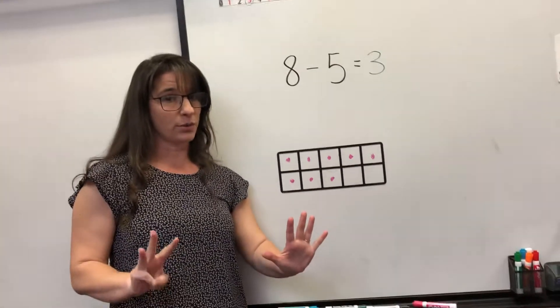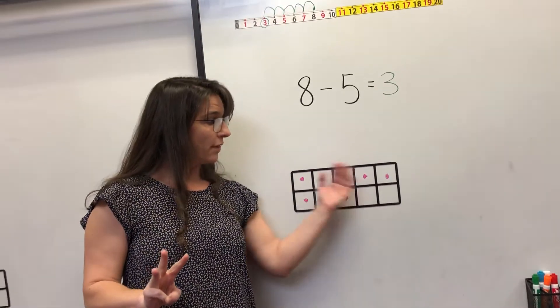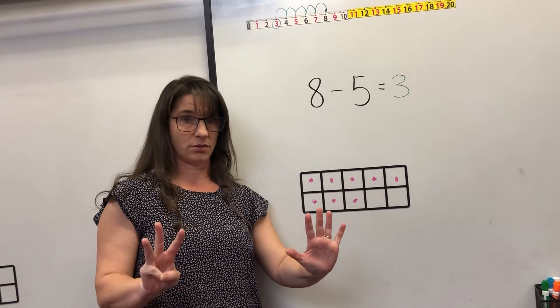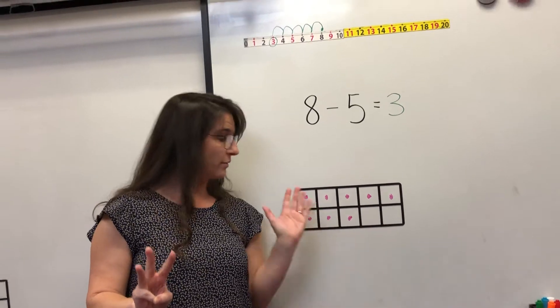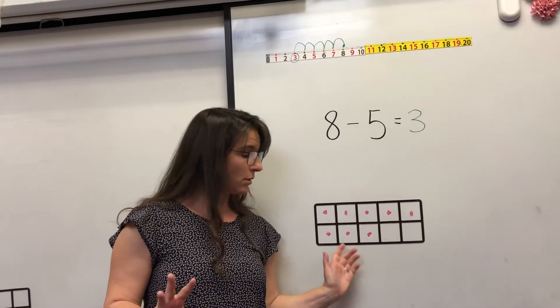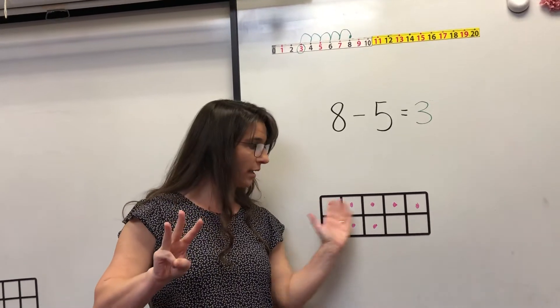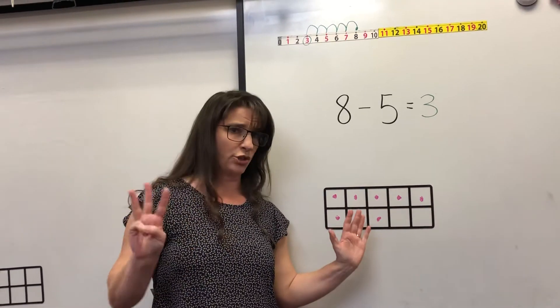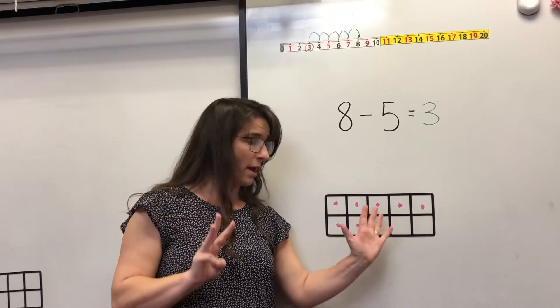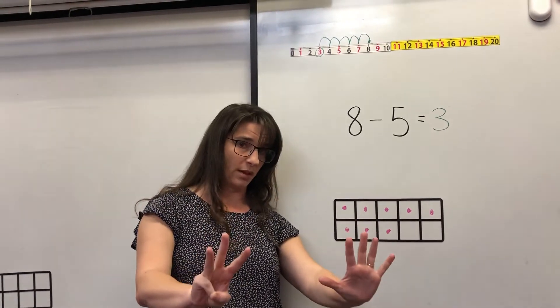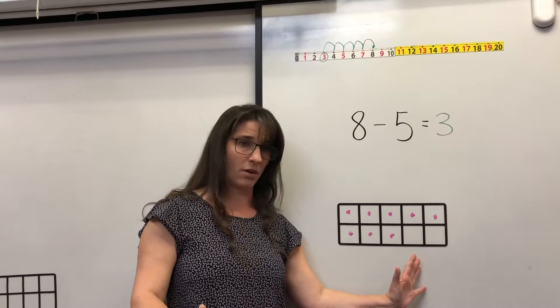Now I want you to notice something. The 10 frame and my fingers - 5 is the top row. Three more are these fingers. So this is like a hand. This is your whole top hand and this is your bottom hand. So if you have the number 8, this is what it looks like on your fingers. This is what it looks like on the 10 frame.